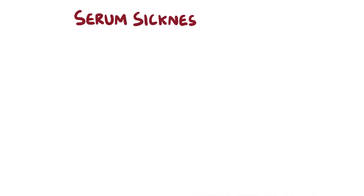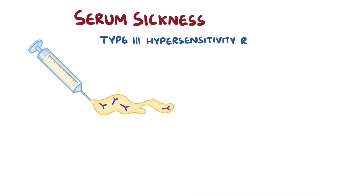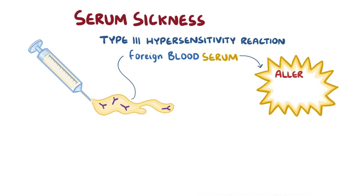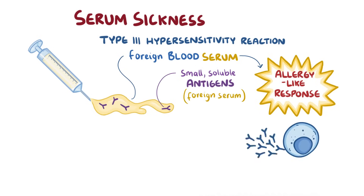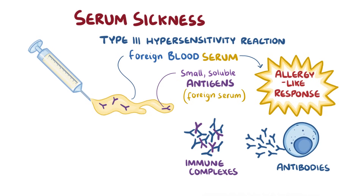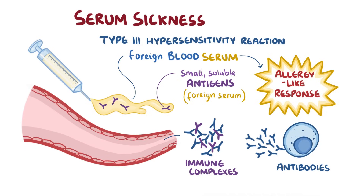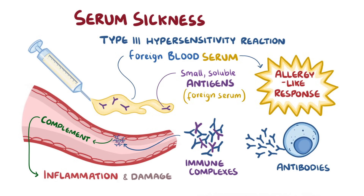To recap the main points: serum sickness is a type 3 hypersensitivity reaction where foreign blood serum causes an allergy-like response. This happens when small, soluble antigens — the foreign serum — elicit the production of antibodies, and those antigens and antibodies bind together to form immune complexes. These immune complexes build up on the basement membrane of blood vessels throughout the body, the complement system is activated, and this causes inflammation and damage to nearby tissues.